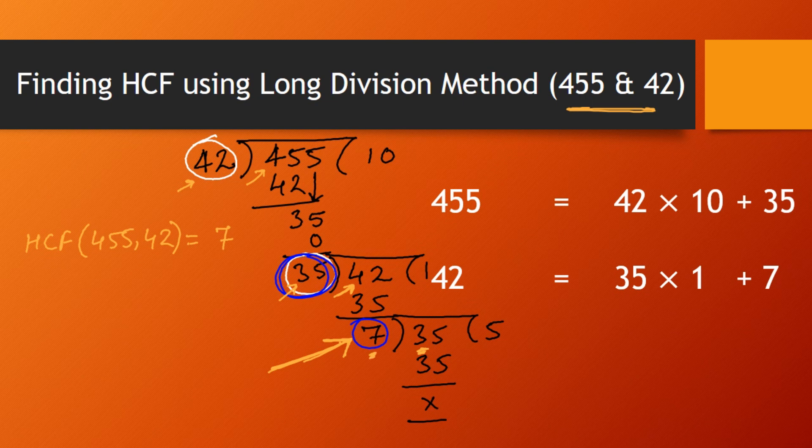Now again applying Euclid's Division Lemma: 35 = 7 × 5 + 0. So I have written the same long division in terms of Euclid's Division Lemma.